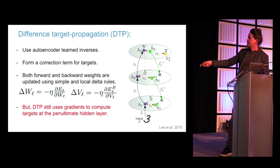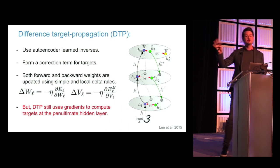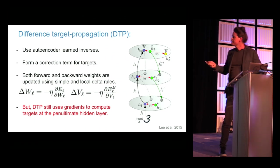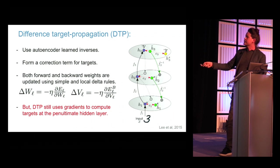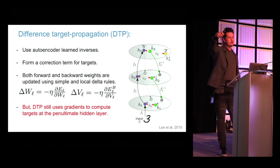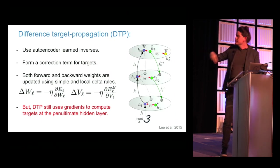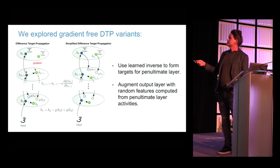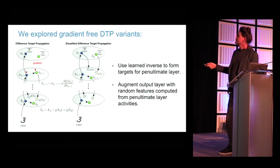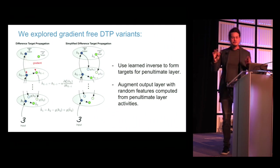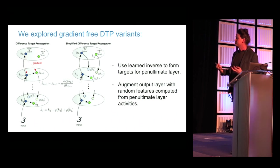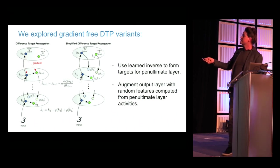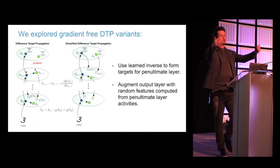DTP still used gradients to compute the targets of the penultimate layer. The algorithm has two simple layer-wise learning rules: one updating forward weights, one updating backward weights using the autoencoder loss. We also explored totally gradient-free versions of DTP where we learned the penultimate layer inverses as well, including augmenting the output layer with random features computed from penultimate layer activities to provide a rich enough target for learning an inverse.